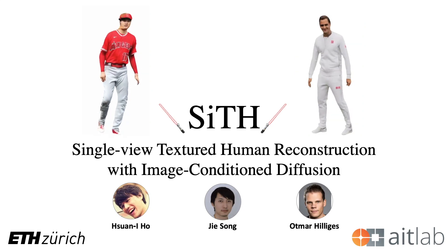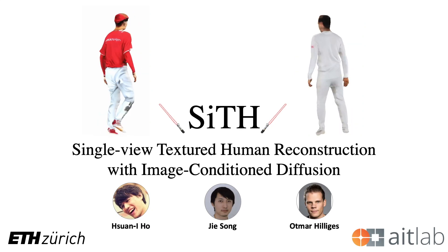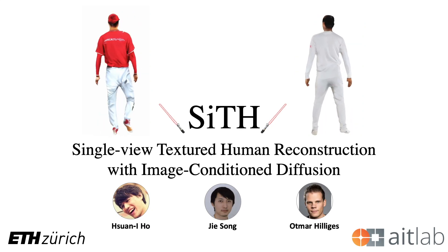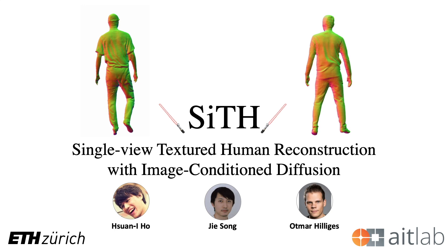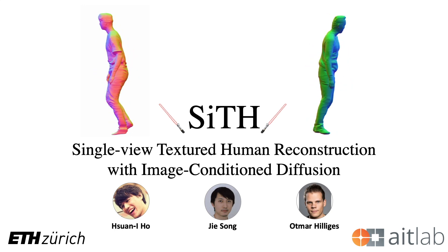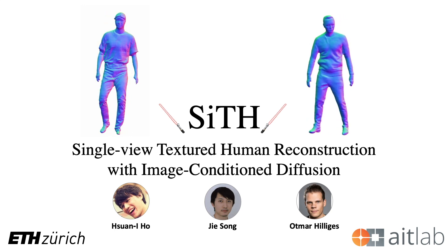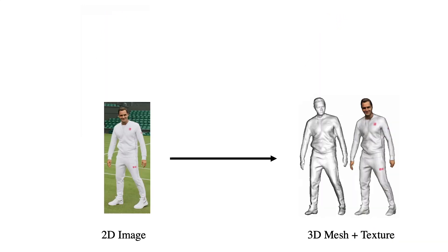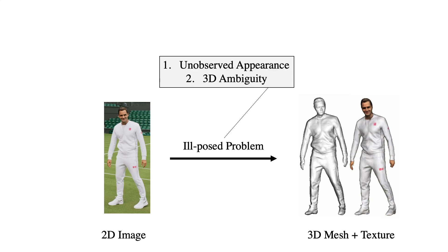We present SITH, a pipeline for single-view textured human reconstruction, leveraging image-conditioned diffusion models. Our goal with SITH is to generate a corresponding 3D mesh and textures from a single image of a human body. However, this task is ill-posed and comes with two primary challenges.